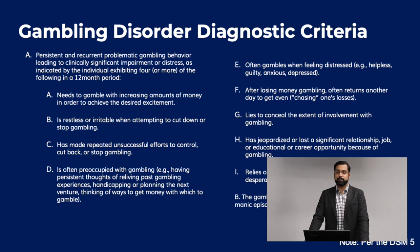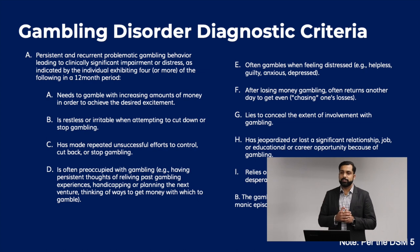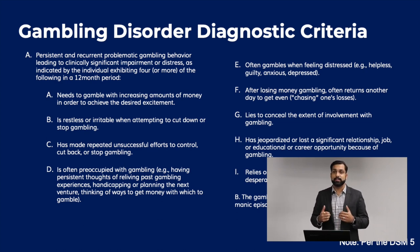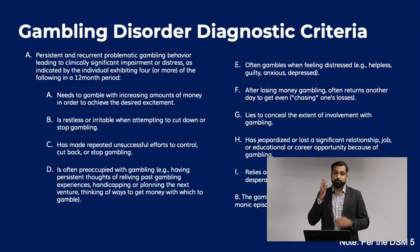Gambling Disorder Diagnostic Criteria per the DSM-5. All the criteria are laid out here, and you can always refer to your own personal copy. The biggest points are: it must be persistent and recurrent problematic behavior leading to significant impairment or distress, and you have to have four of these categories listed within a 12-month period. Once you see that, please take a deeper look at your patient.